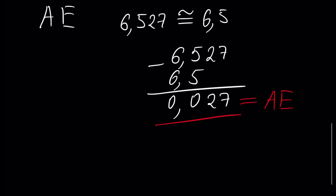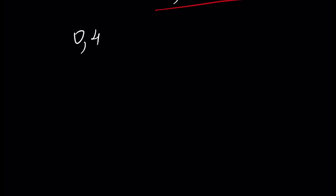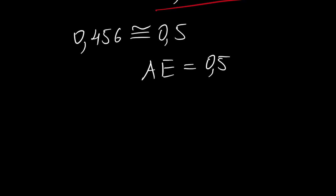Let's calculate the absolute error for another approximation. Assume we have 0.456 and this is approximately equal to 0.5, because we wanted to leave just two digits. The absolute error is 0.5 minus 0.456, and this is 0.044.